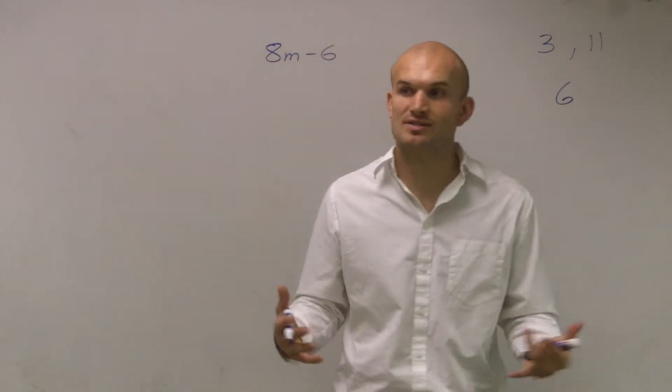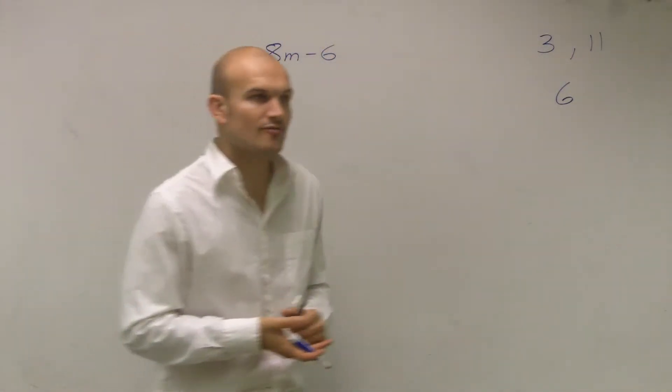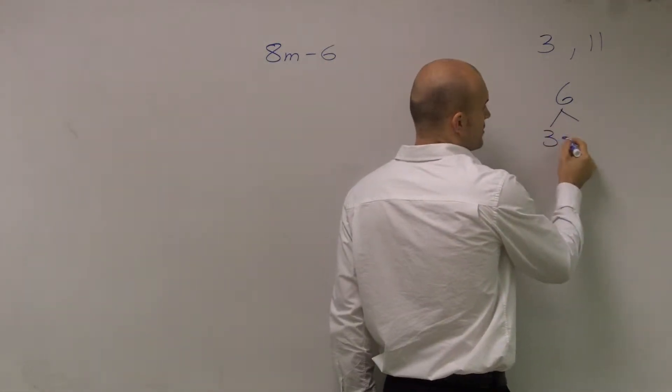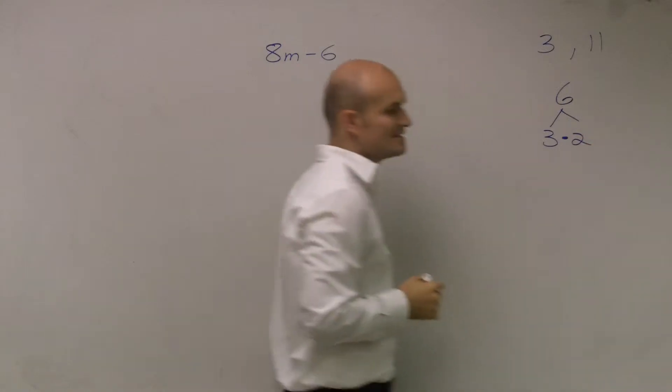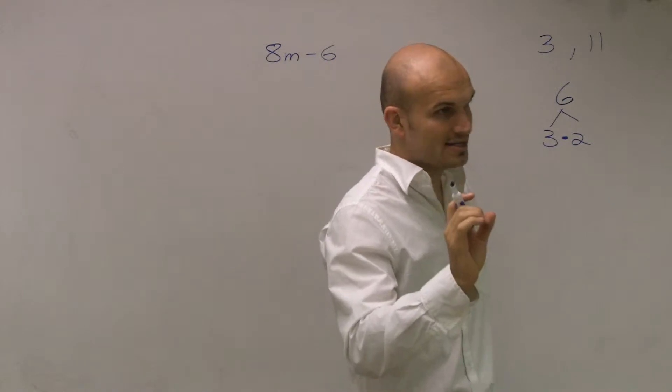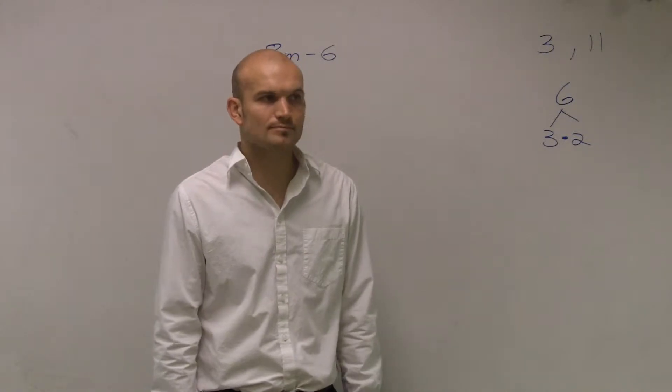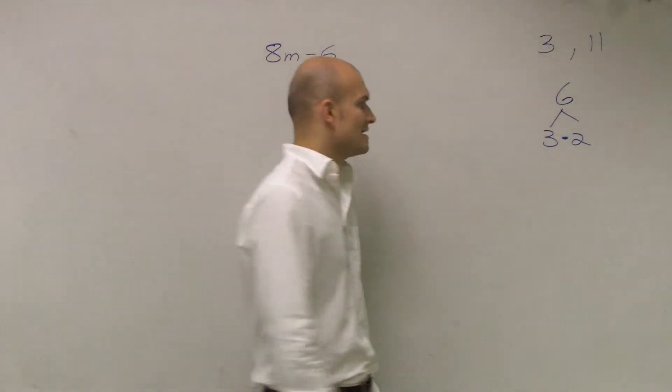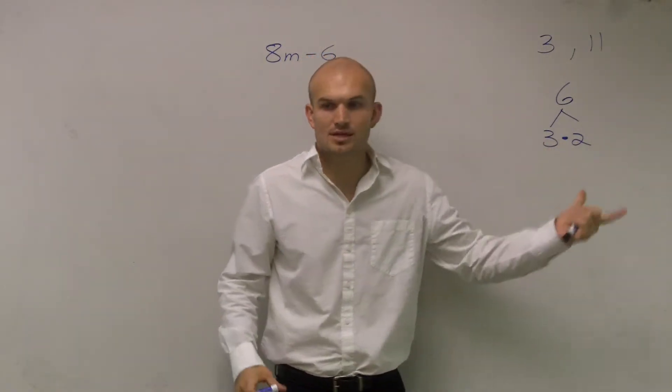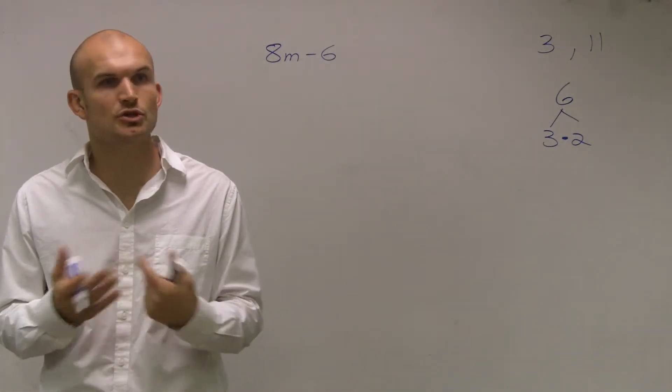Now when I say factor out 6, what we want to do is write it out as a product of its factors, which in this way would be a multiplication. So 6 times 2 would be 3 times 6. Factoring 6, writing it as a product of its prime factors, which would be 3 and 2. So the main important thing I want you guys to understand from this is when we factor something out, we're looking to set it up as a multiplication of two prime factors.